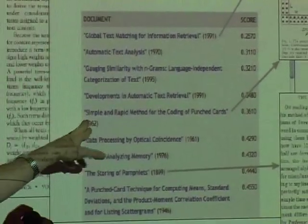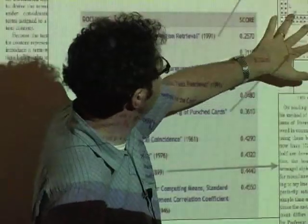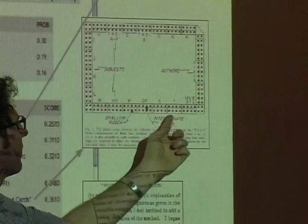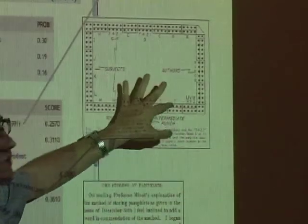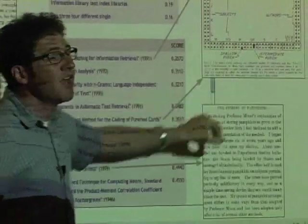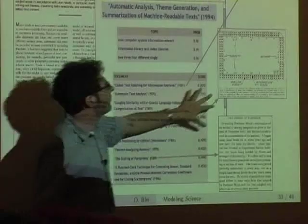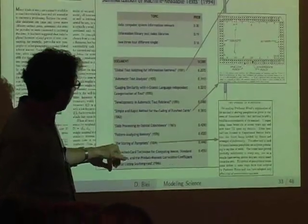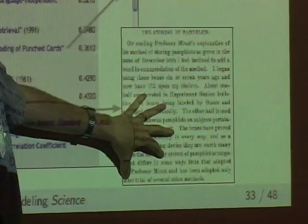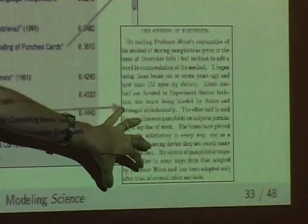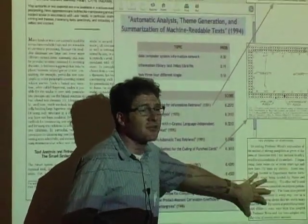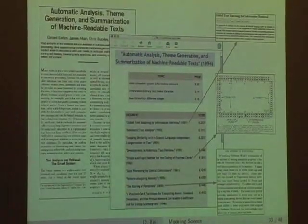Not too far down the similarity list, from 1962, is 'Simple and Rapid Method for the Coding of Punch Cards' — an article about encoding authors and subjects on punch cards, arguably the same type of technology being developed in the 1994 article. Also in the top ten, from 1899, is 'The Storing of Pamphlets' — a fascinating article about scientists dealing with the problem of having pamphlets all over the office and needing to store them. Both articles are about scientists trying to deal with all their information, just with a totally different language.